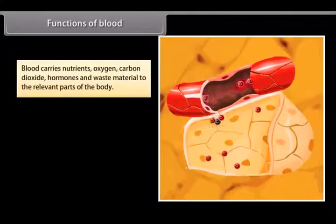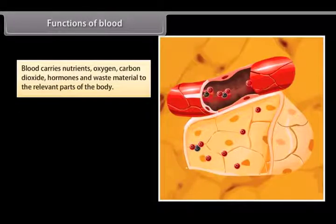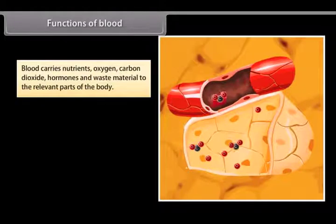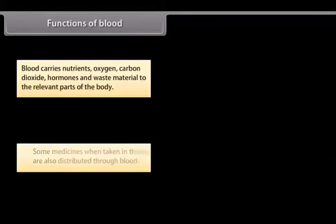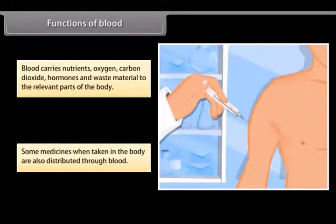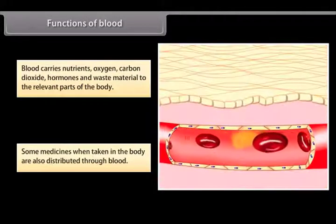Functions of blood. Blood carries nutrients, oxygen, carbon dioxide, hormones and waste material to the relevant parts of the body. Some medicines when taken in the body are also distributed through blood.